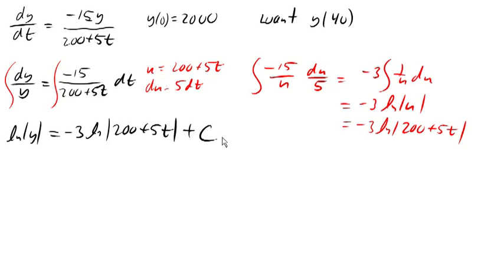Great. So now we can exponentiate both sides to undo the ln on the left. So we get y equals e to the negative 3 ln(200 plus 5t). And I'm gonna go ahead and break this apart here as multiplying e to the c, and then I'm gonna end up calling this a new constant. So I got y equals some new constant, e to the minus 3 ln(200 plus 5t).